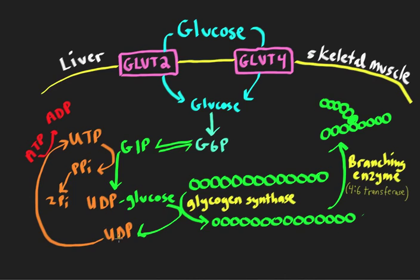The UDP released can be phosphorylated back to UTP to keep the cycle going. Glycogen synthesis is an energy-requiring process — we need ATP for it. Some of that ATP comes from glucose oxidation and glycolysis making ATP, which helps drive the glycogen synthesis pathway.